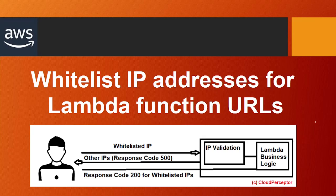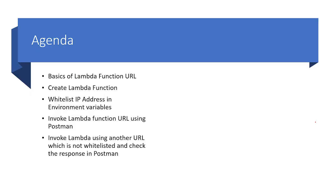Hello and welcome to Cloud Perceptor. Today I'm going to do a hands-on session for whitelisting IP addresses for Lambda function URLs. This is our agenda: we'll start with the basics of Lambda function URLs, then create a Lambda function where we'll be whitelisting IP addresses, setting that in the environmental variables, and invoking the Lambda function using Postman via the function URL. We'll also check the negative scenario where an IP address is not whitelisted.